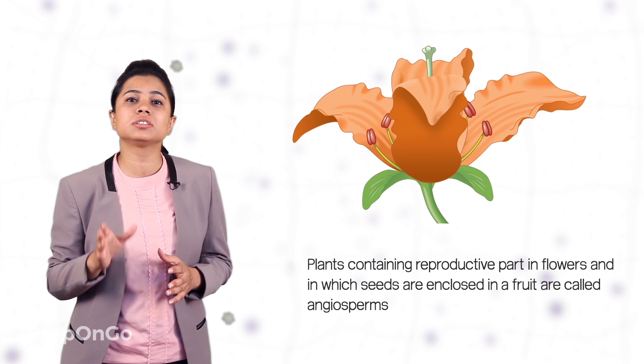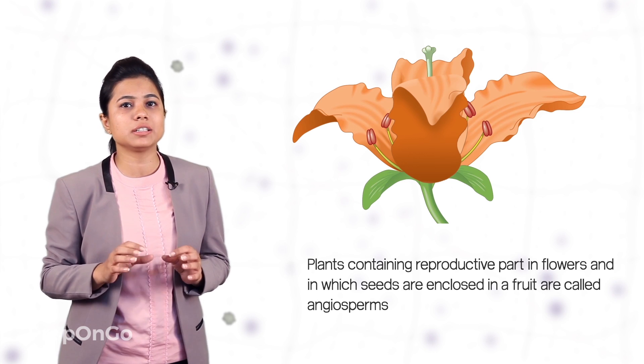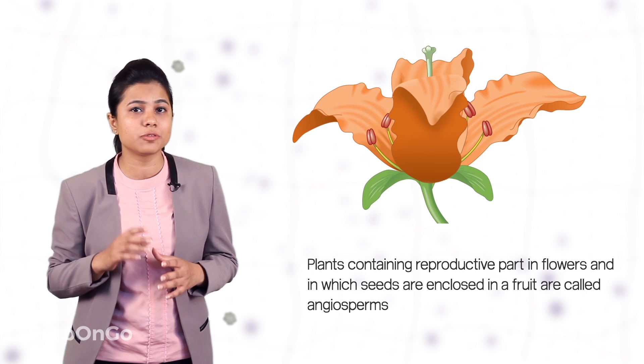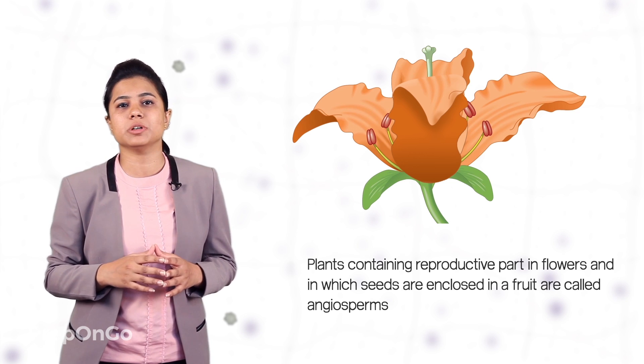So let's understand the process of reproduction in flowering plants. The reproductive parts of the flowering plants are situated in the flower. These flowering plants, in which the reproductive parts are carried within the flower and the seeds are enclosed in fruits, are called as angiosperms.